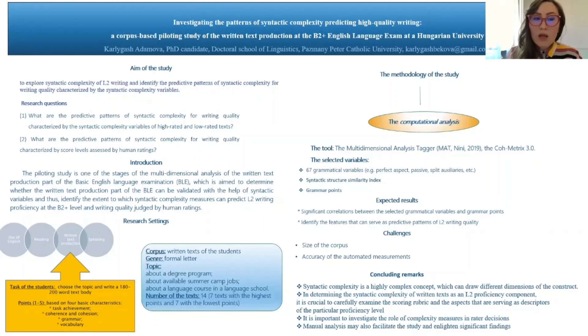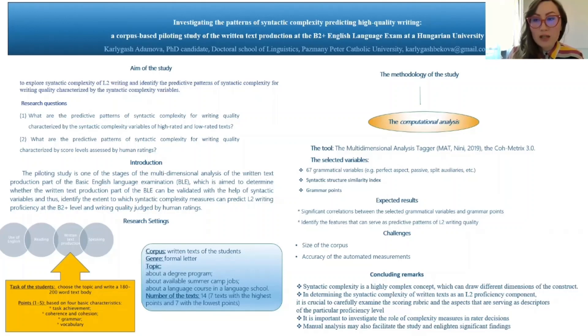The second research question is: what are the predictive patterns of syntactic complexity for writing quality characterized by score levels assessed by human ratings?